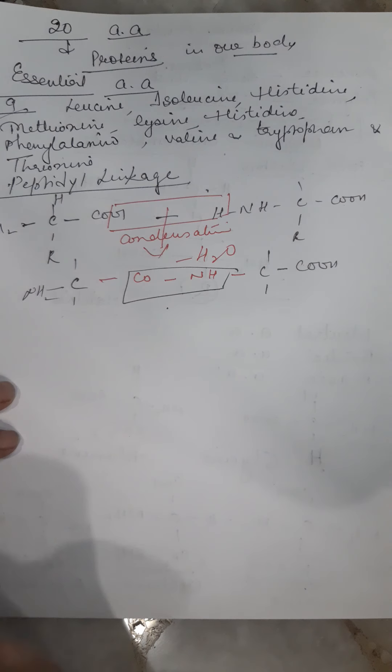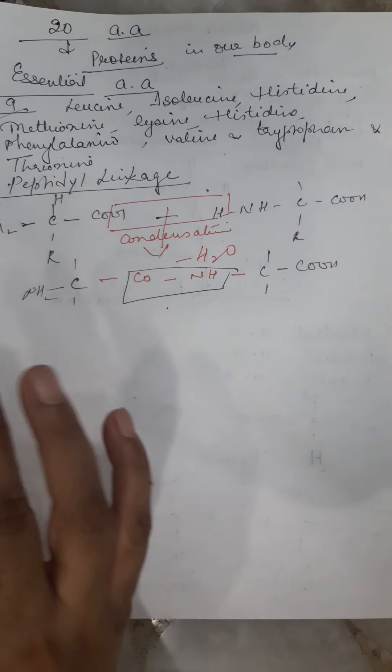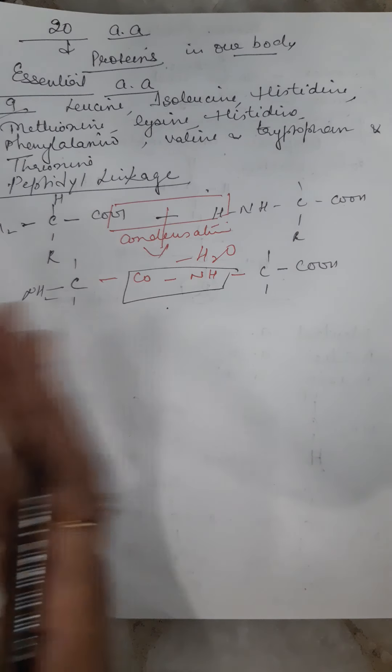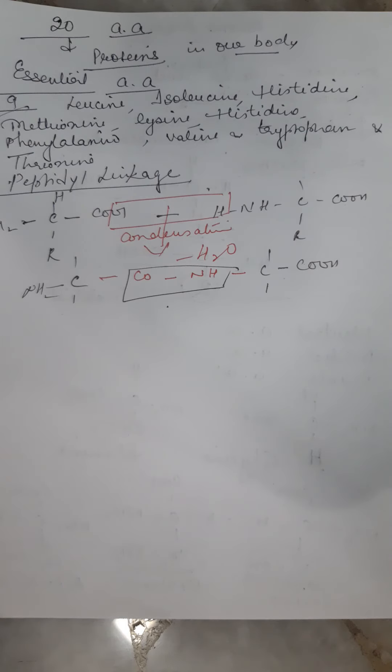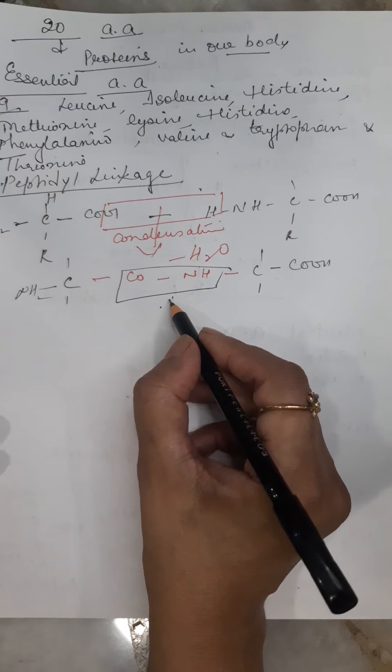With the help of this linkage, many amino acids form a long protein. This protein may have hundreds or thousands of such amino acids.